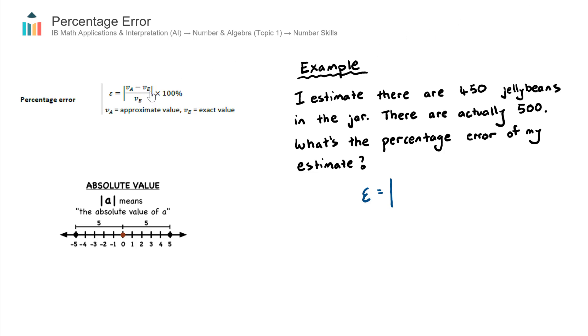Inside the absolute value symbols there is a fraction, and on the numerator is the approximate value. So my estimate, my approximation was 450.